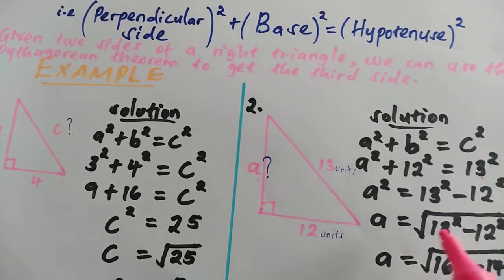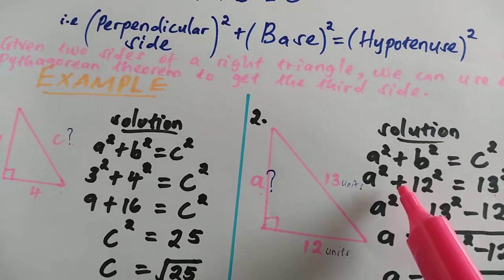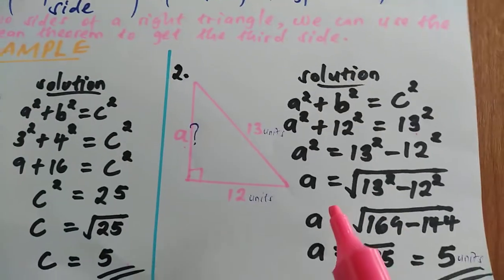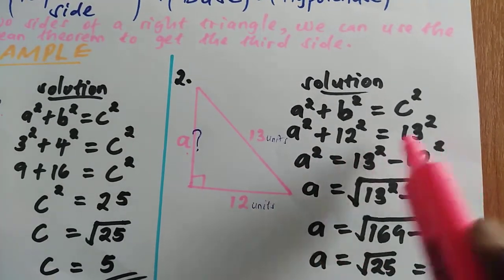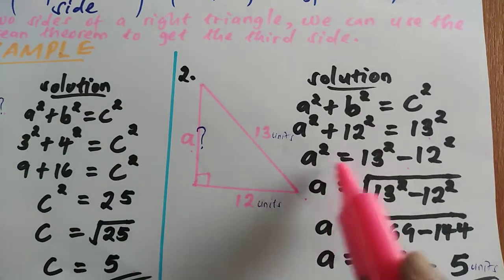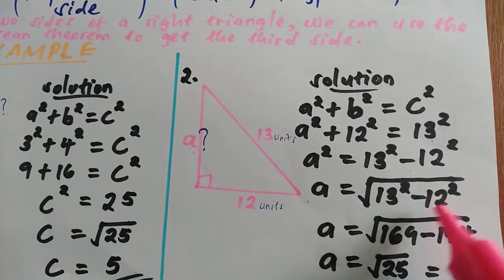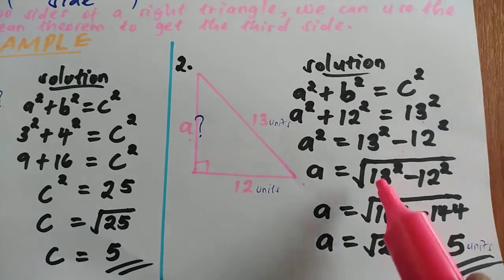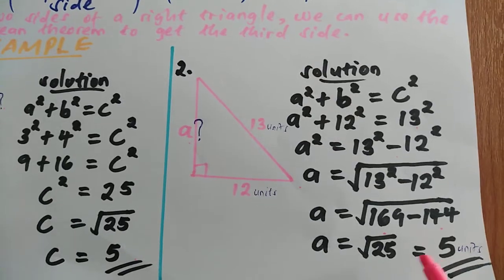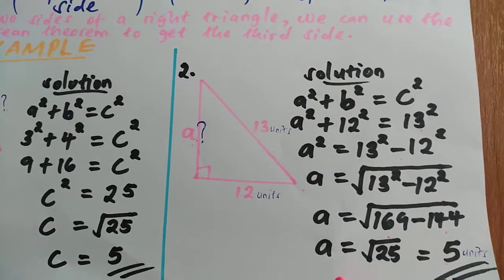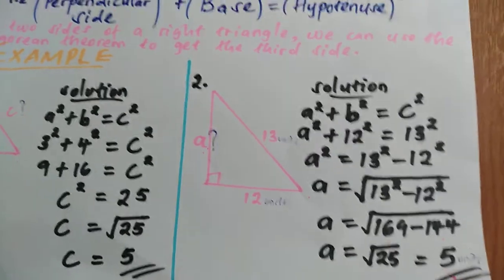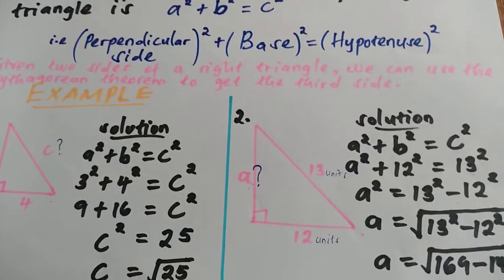So a squared plus 12 squared equals 13 squared. Rearranging, a squared equals 13 squared minus 12 squared, so a equals the square root of 13 squared minus 12 squared. 13 squared is 169, 12 squared is 144, and 169 minus 144 is 25. So a equals the square root of 25, which means a equals 5. The perpendicular side of this right triangle is equal to 5 units. And that's all about the Pythagorean theorem — thanks for watching!